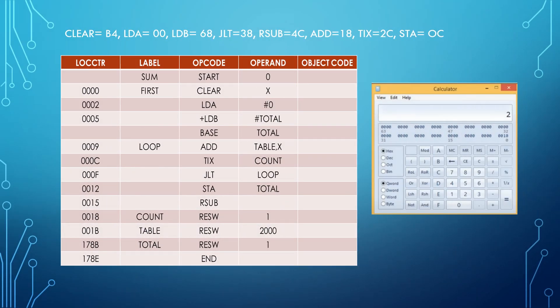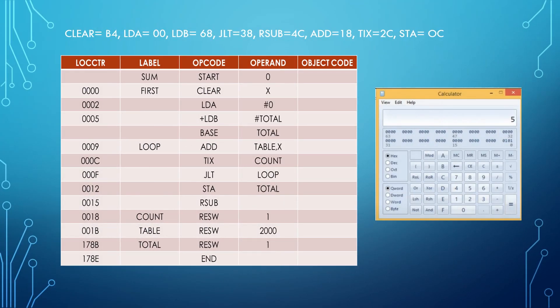The initial value of the location counter is set to 0 because of the START 0 directive. Next, we have CLEAR X. CLEAR X is a Type 2 instruction format, so we add 2 to the initial location counter value, giving us 2. Next, we have LDA #0. LDA #0 represents a Type 3 instruction format, so we add 3 to get a location counter value of 5.